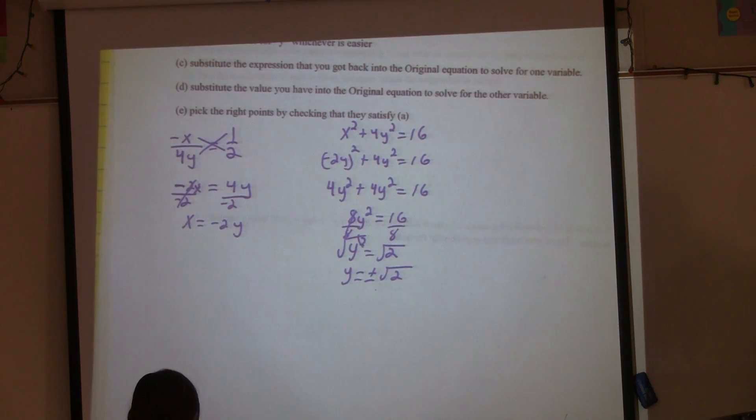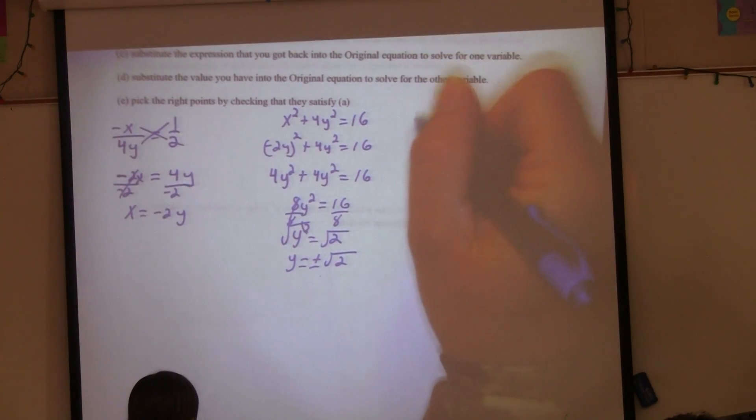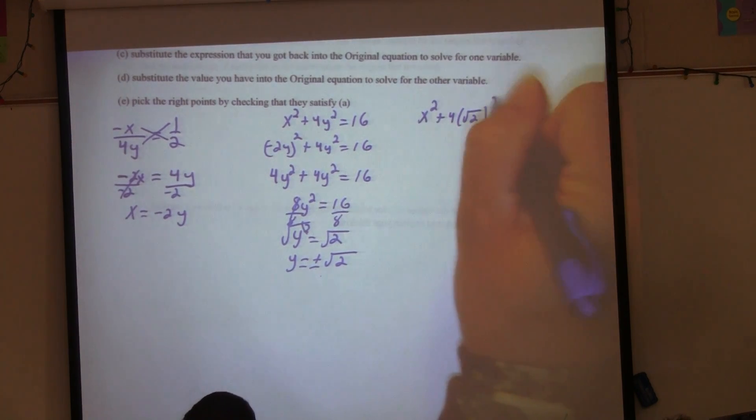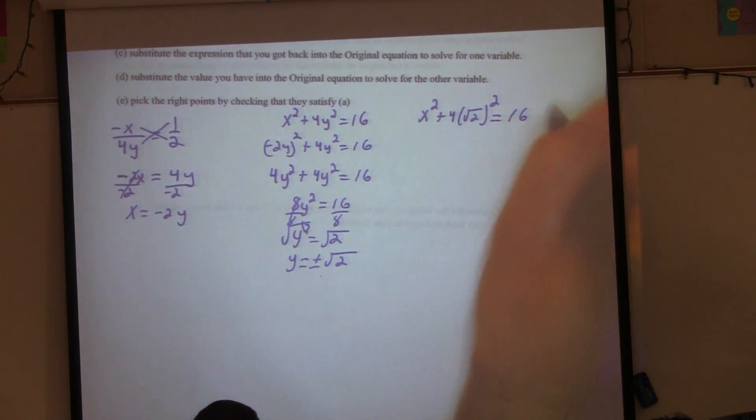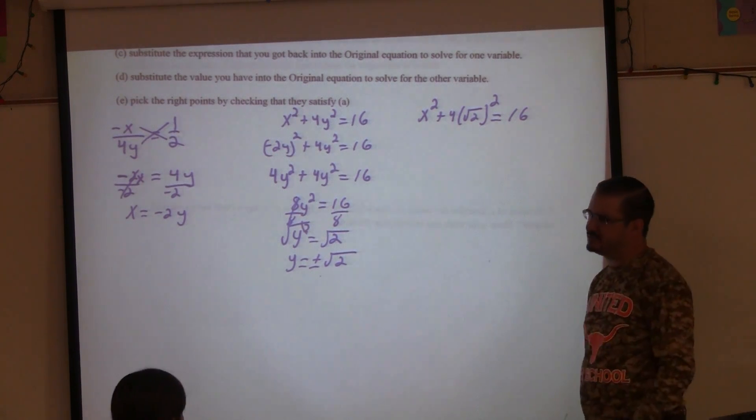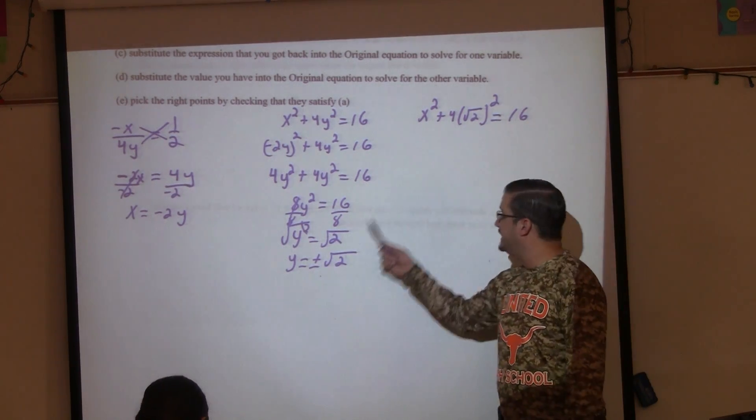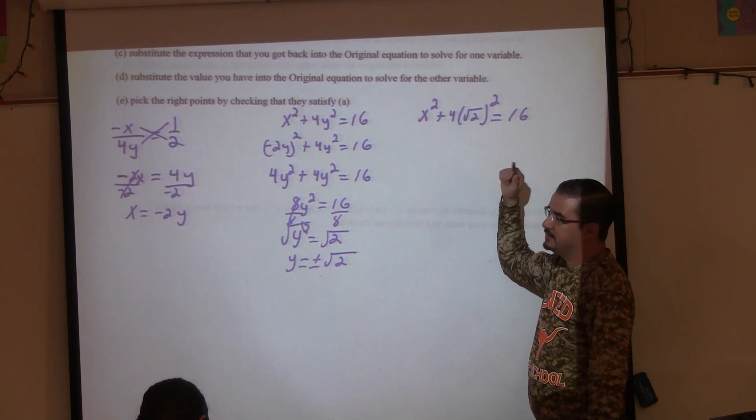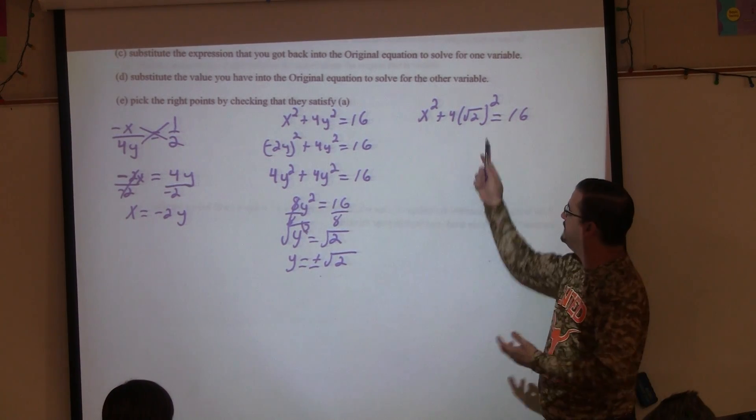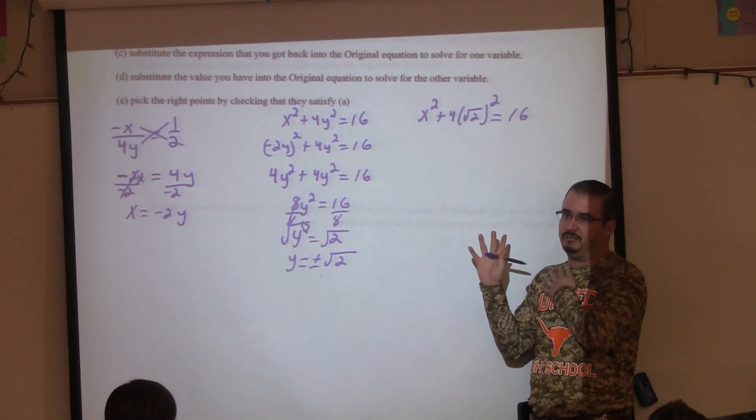Plug it in again into the original equation. So I'm going to have X² + 4 times (√2)² = 16. Do I actually have to do both of them, or would both of them give me the same answers? What would happen if I put -√2 in there? And I square it, would I still get the same value? Yes.